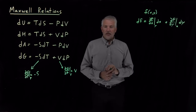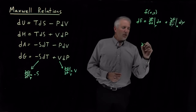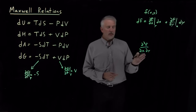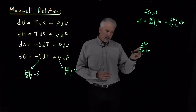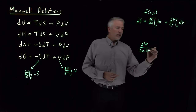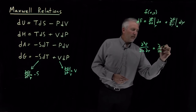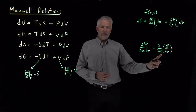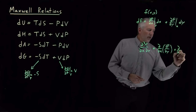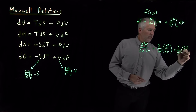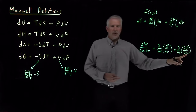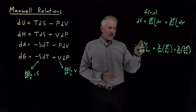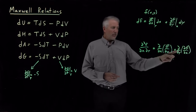Now let's think about second derivatives. The mixed second partial derivative d²f/dx dy can be thought of in two different ways: as the x-derivative of the y-derivative (first take the y-derivative, then the x-derivative), or the y-derivative of the x-derivative (first take the x-derivative, then the y-derivative). It doesn't matter what order I take those derivatives in — I'll get the same answer either way. This mixed second partial derivative is the same regardless of order.